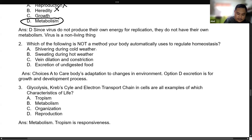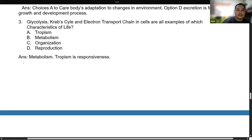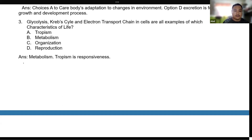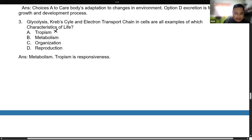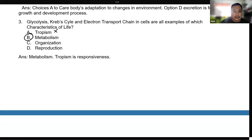Question 2: Which of the following is NOT a method your body automatically uses to regulate homeostasis? Shivering during cold weather, sweating during hot weather, and vein dilation and constriction are all forms of homeostasis. The answer is excretion of undigested food, which is not under homeostasis. Question 3: Glycolysis, the Krebs cycle, and the electron transport chain are examples of which characteristic of life? The answer is metabolism.